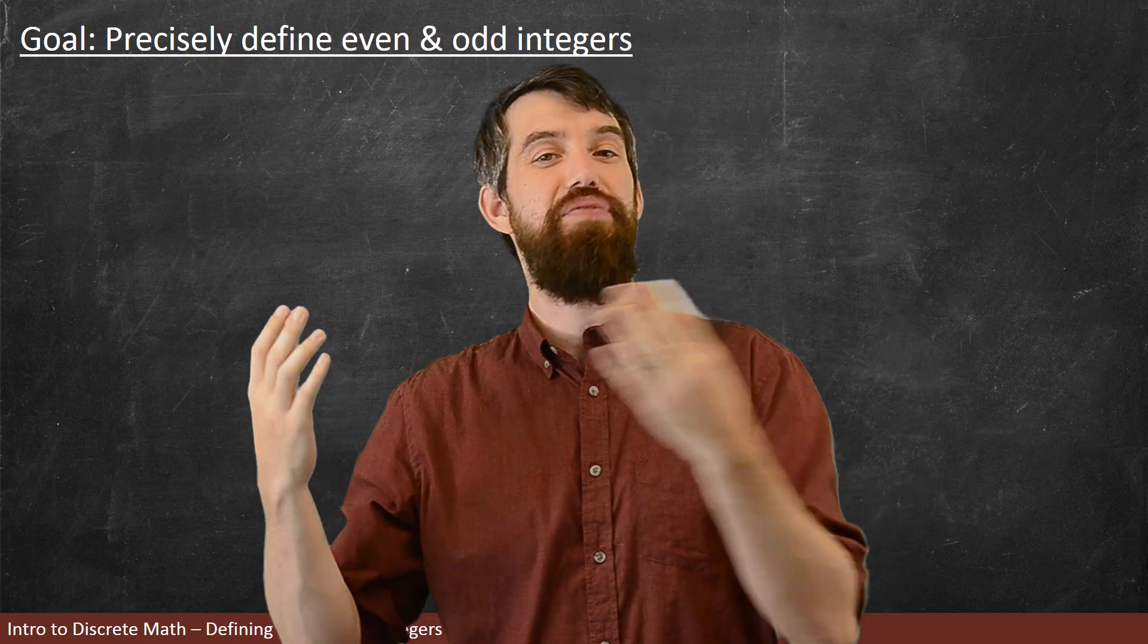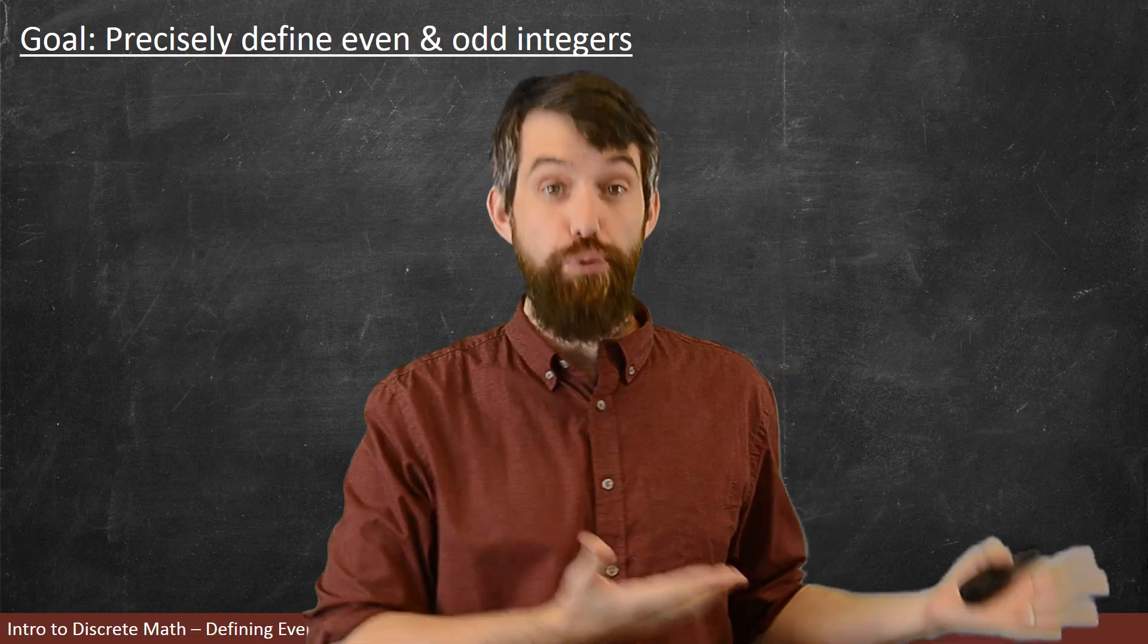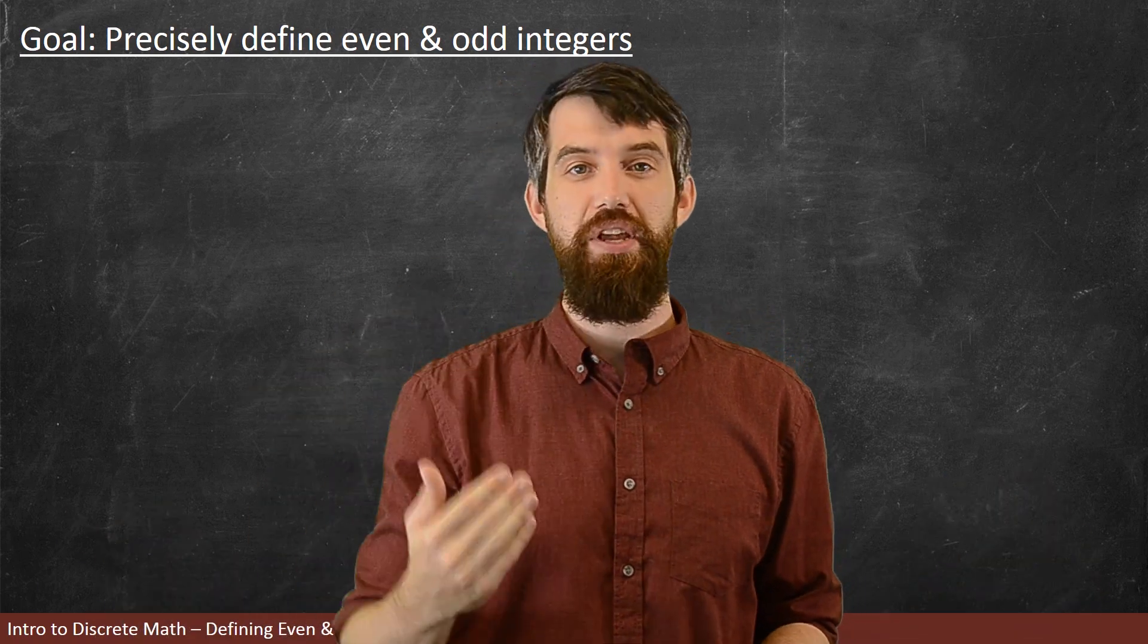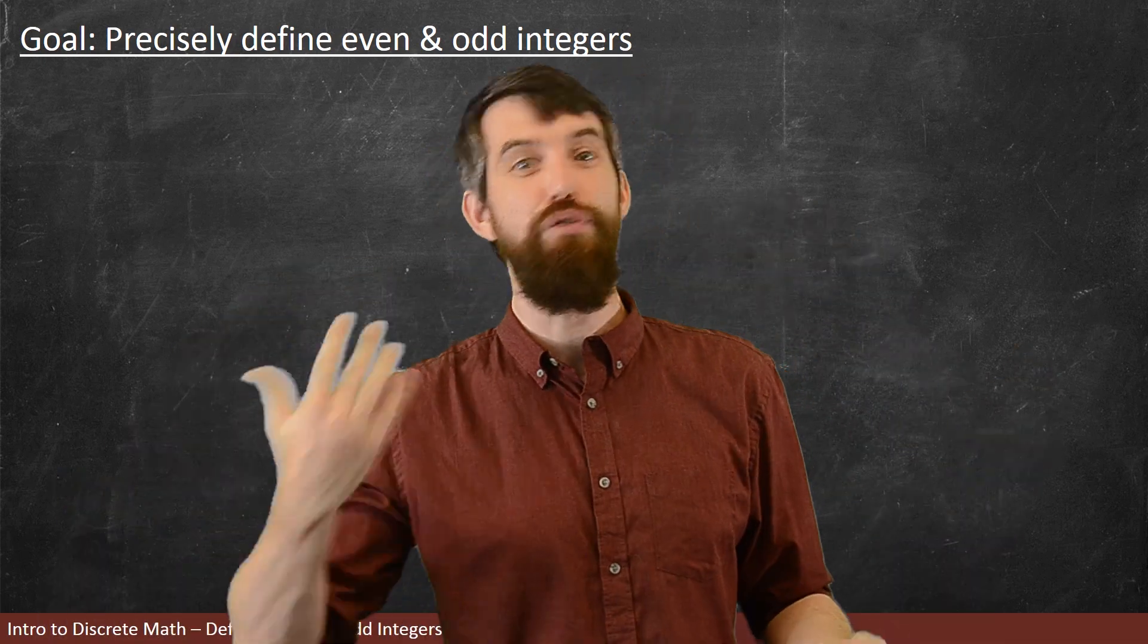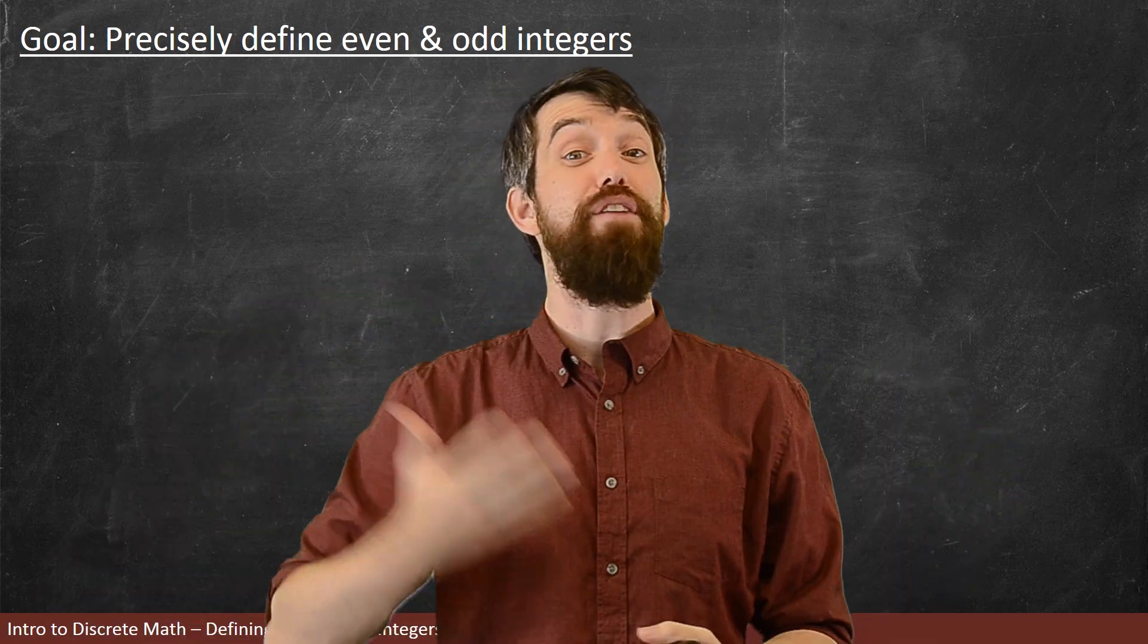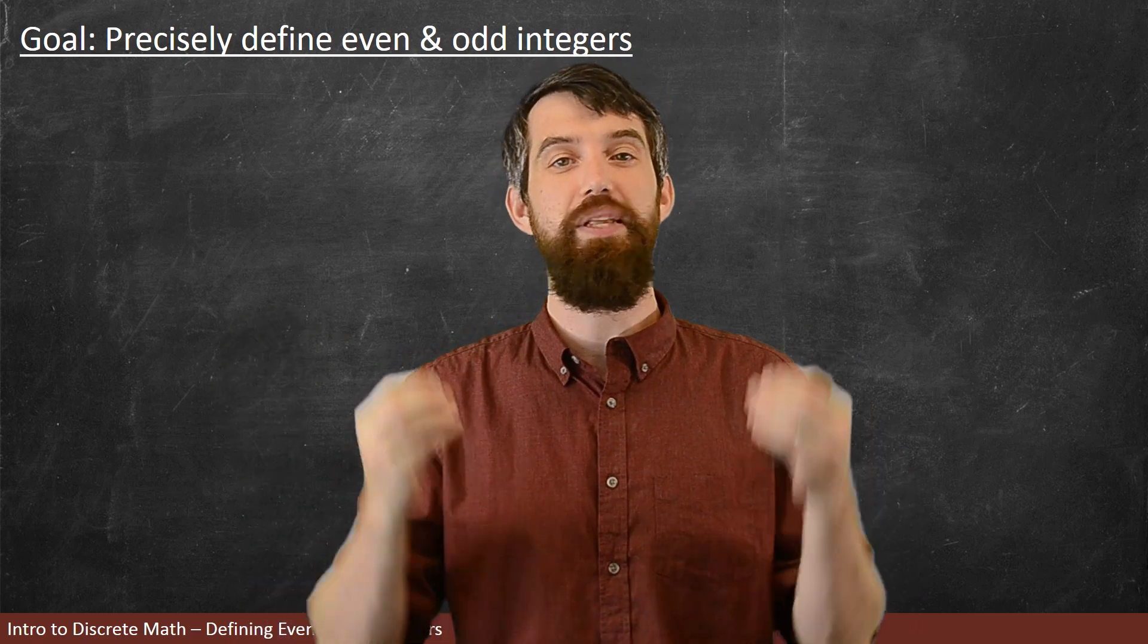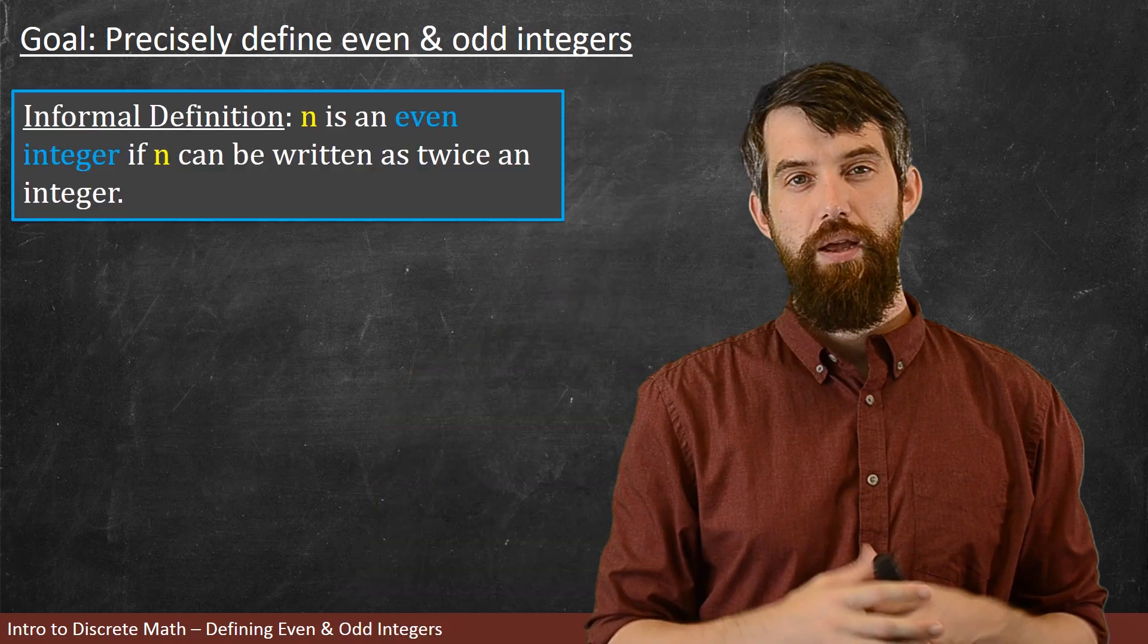And the idea is this: when we're trying to make claims about mathematics and when we're trying to prove claims in mathematics, we need to have a high degree of precision. Simply saying we understand what even numbers are, they're numbers like 2, 4, 6, 8, and saying that we understand what odd numbers like 3, 5, 7, and 9 are is insufficient. We need to use incredibly precise ideas for what these concepts actually are.